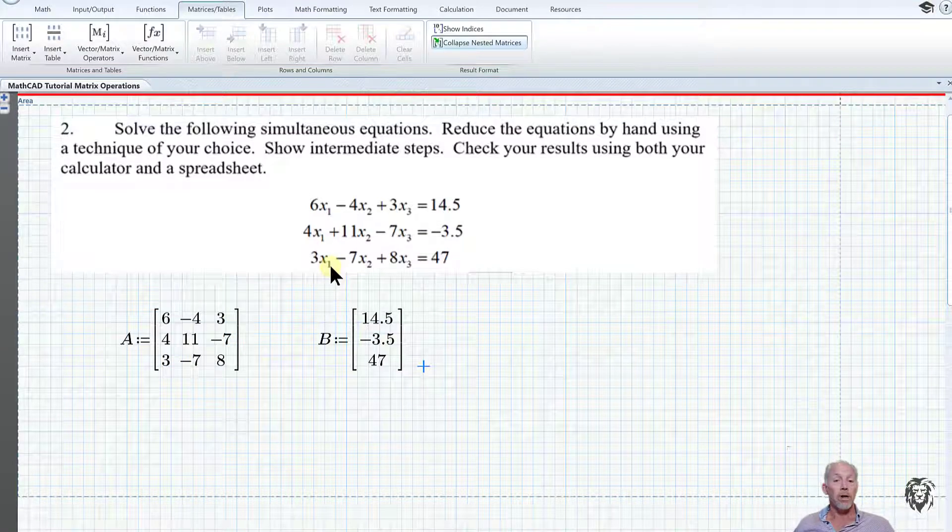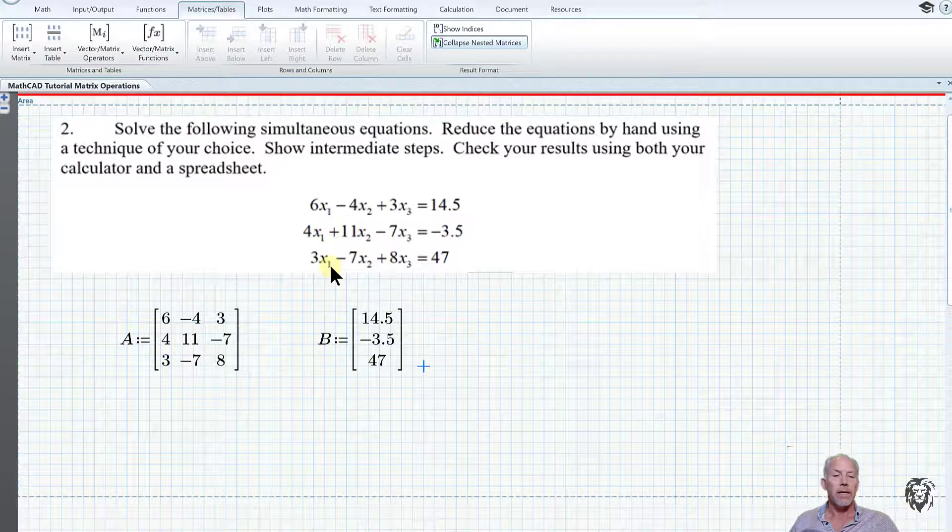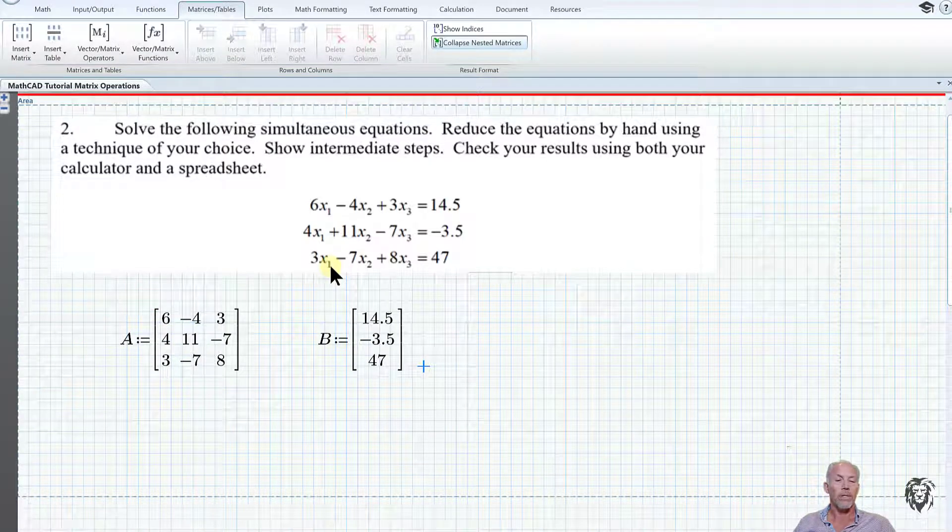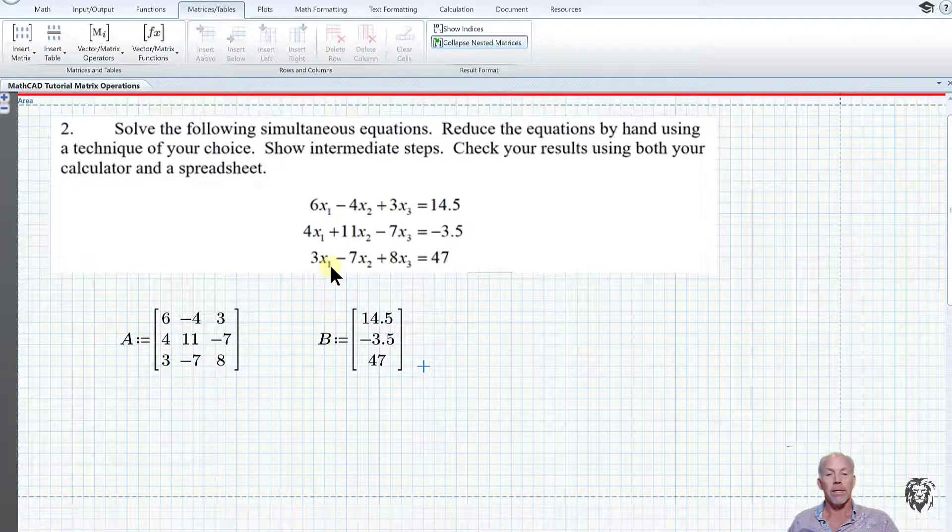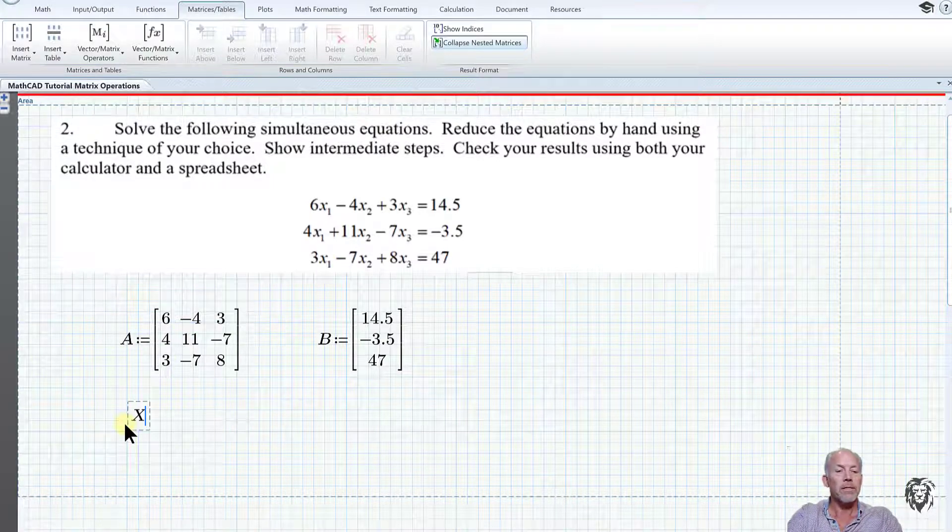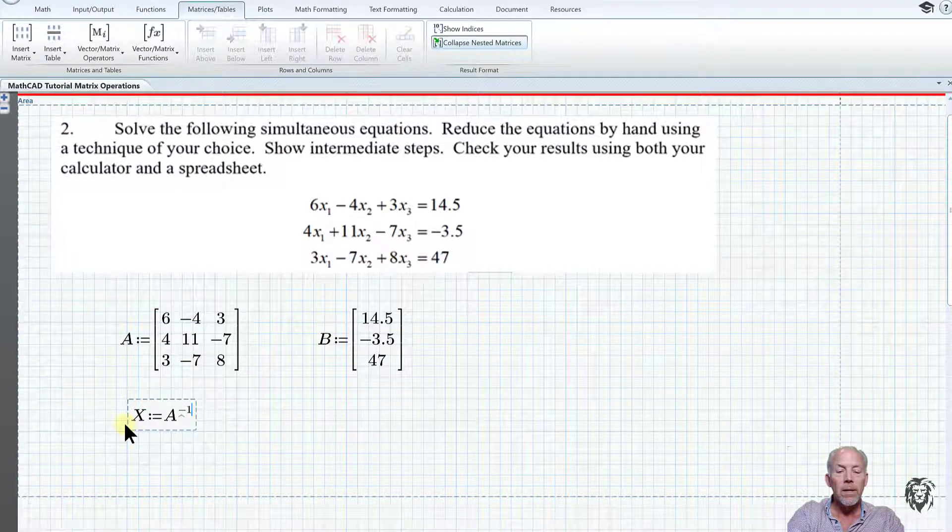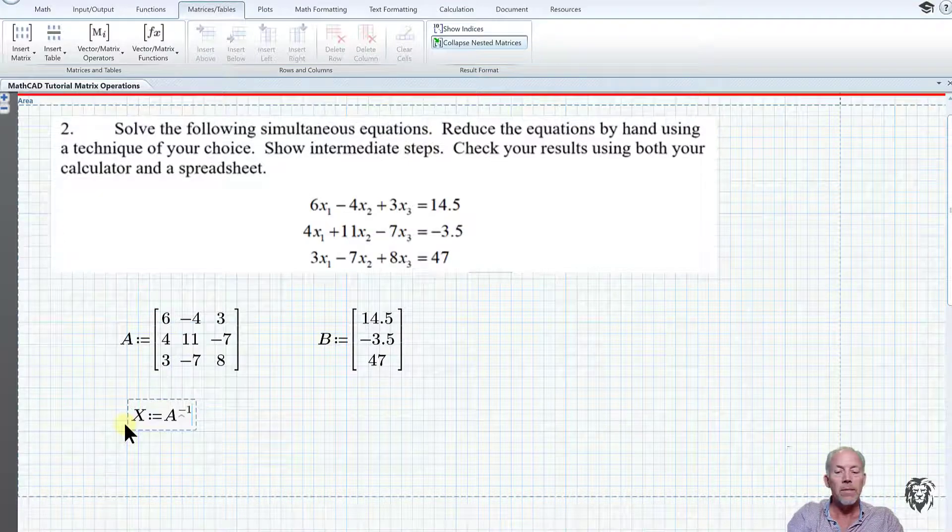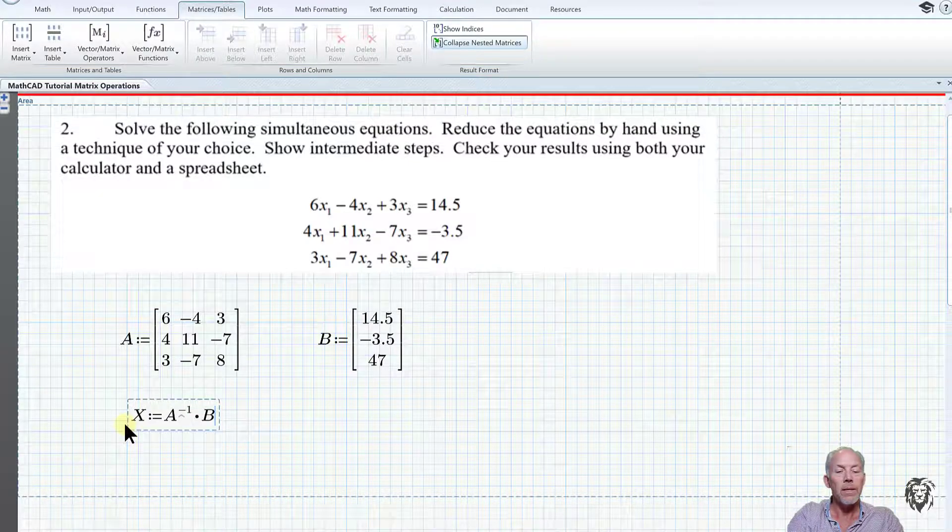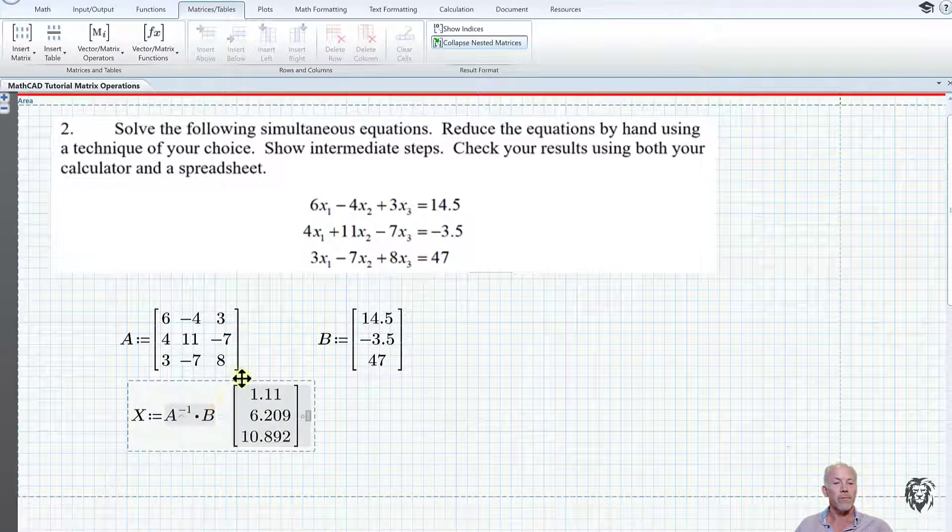If I want to solve for the X values (x1, x2, x3), I'm going to take the inverse of A multiply it by B, and that will give me the X matrix. So X equals A to negative one multiplied by B equals, and we have the solution to our problem as it was laid out.